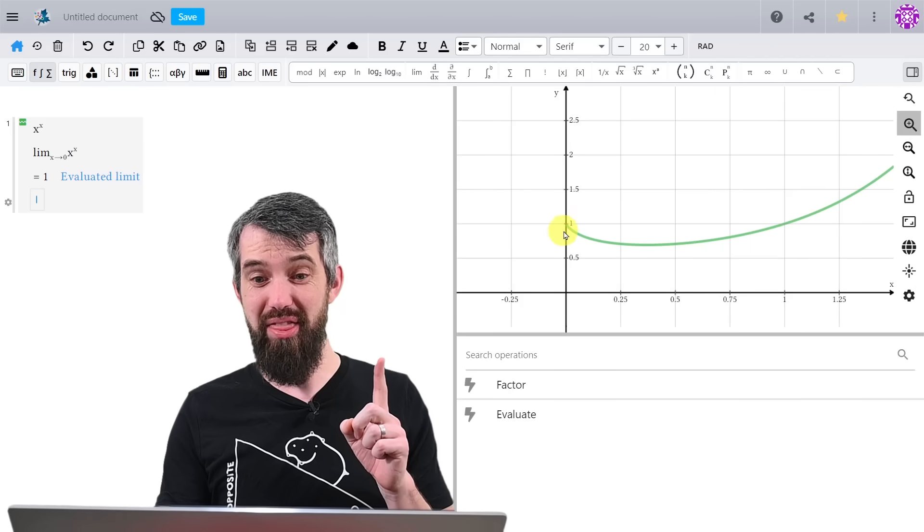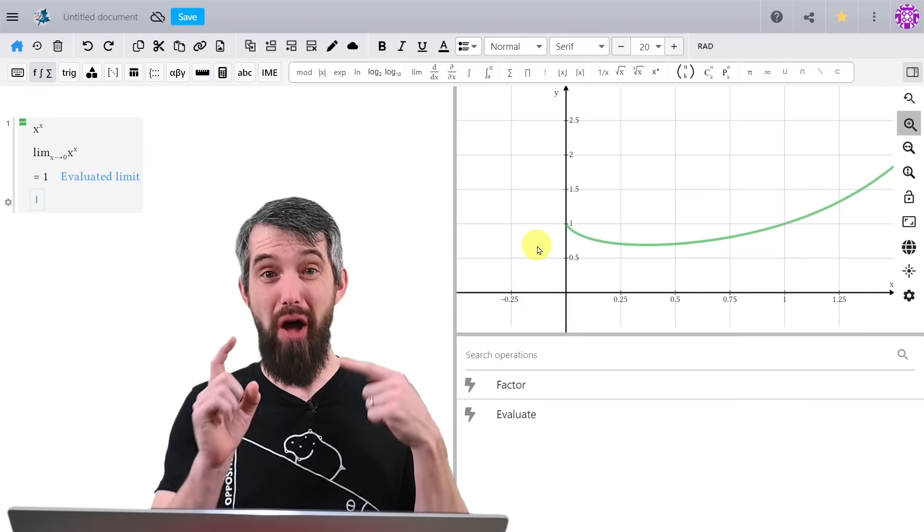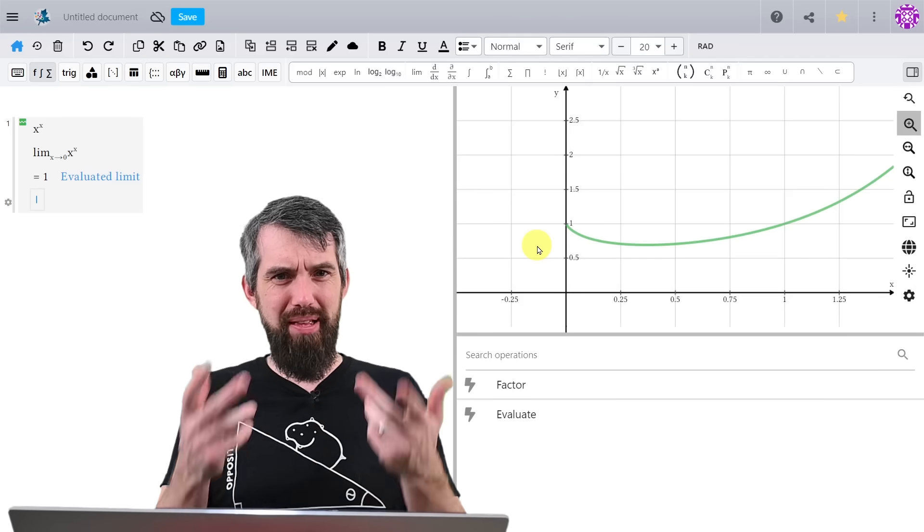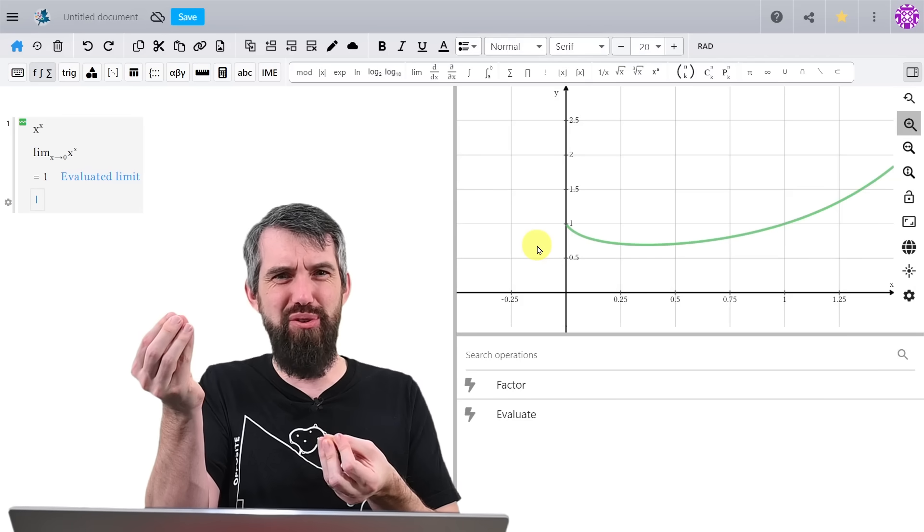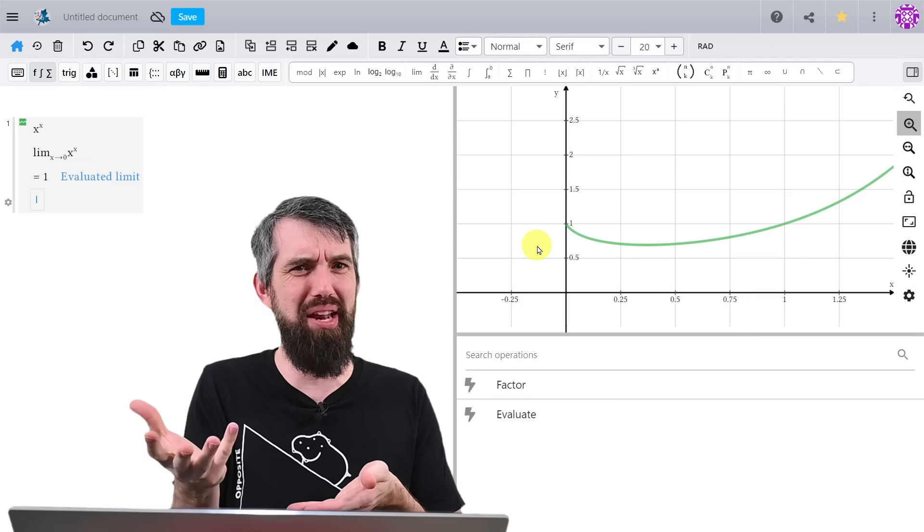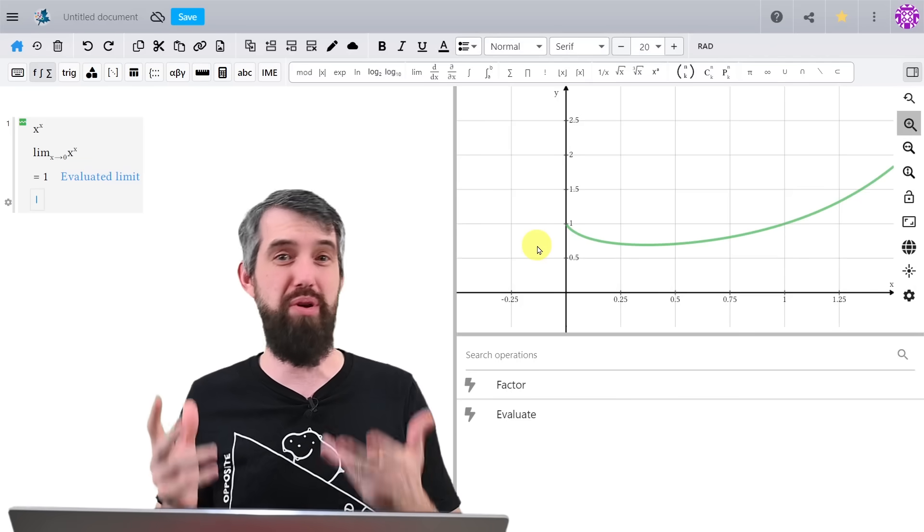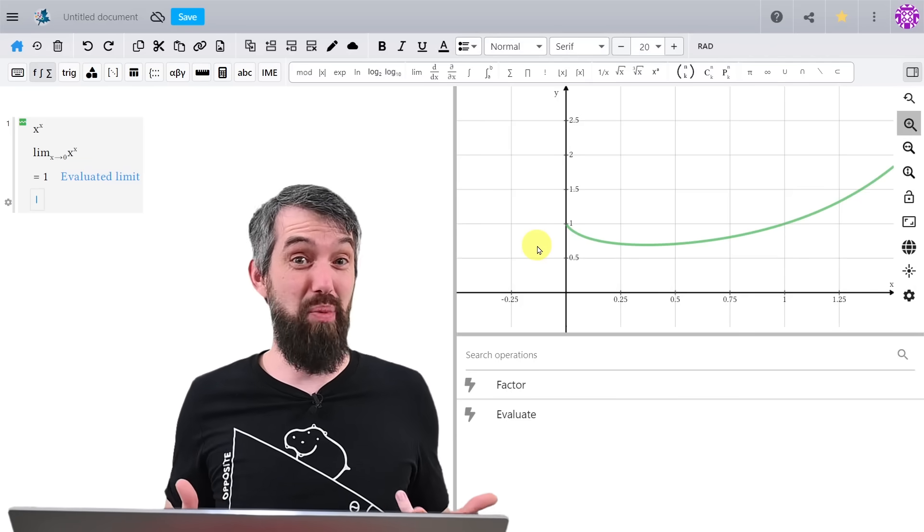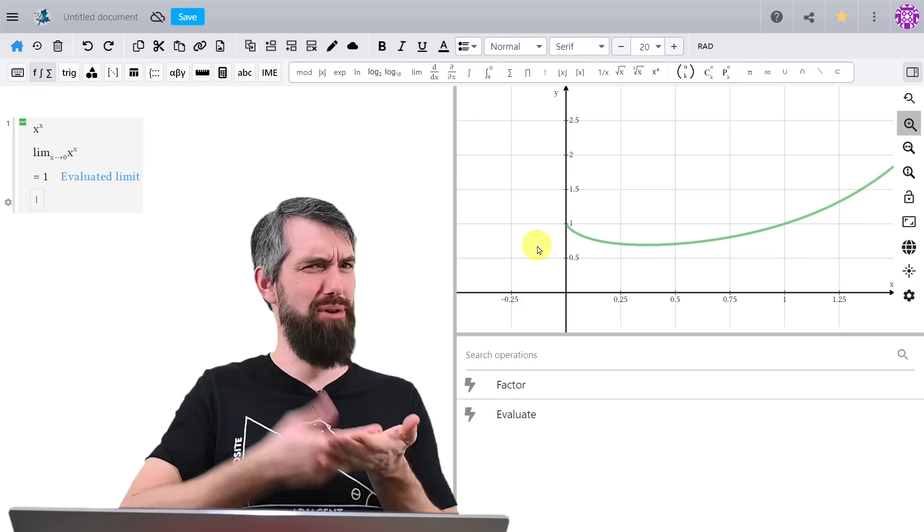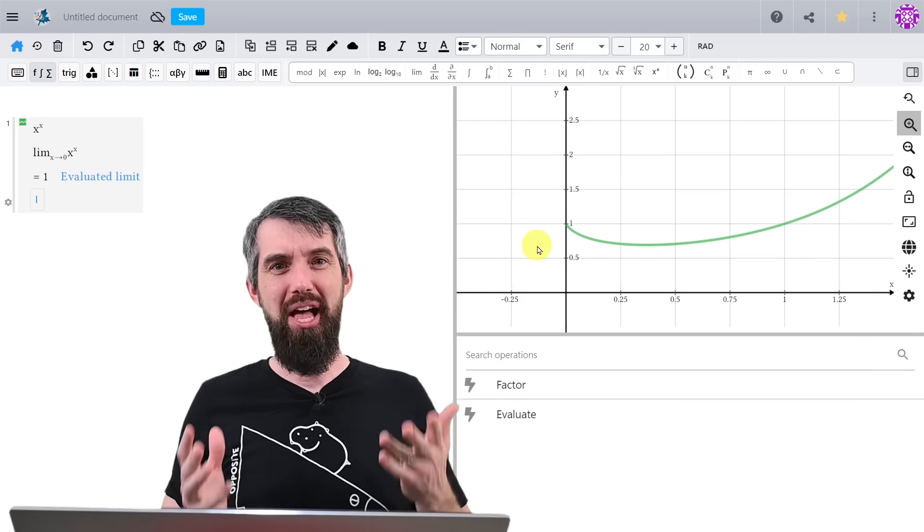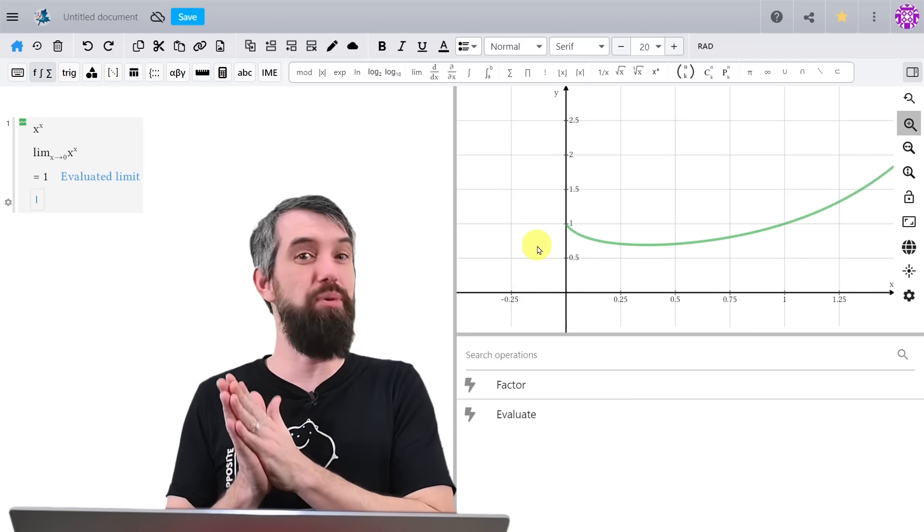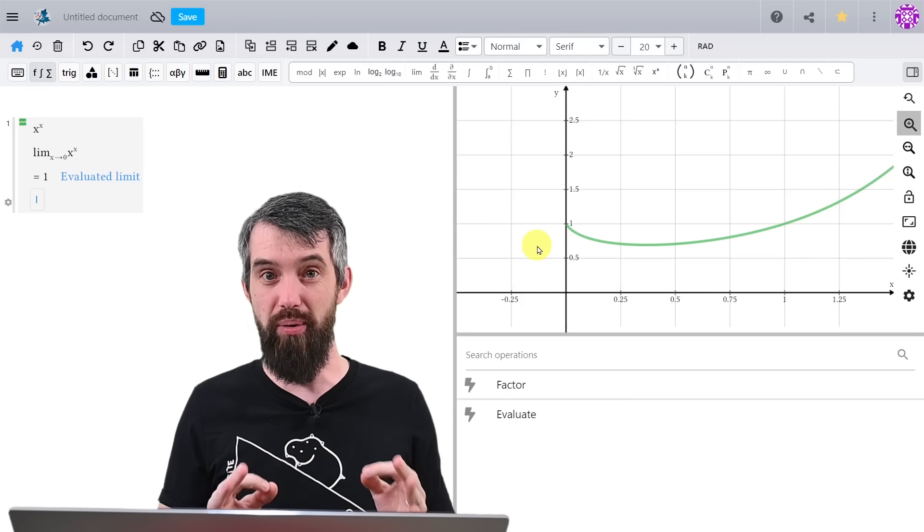It's also worth noting that the plot just drops off for negative values. And this is because if you take something like negative 1 half to the power of negative 1 half, you're taking the square root of a negative number not allowed over the real numbers. There are actually some values where it's not problematic to the left, like negative 1 third to the power of negative 1 third, not a problem. But so many of them are problems that we're just not going to sketch anything to the left of x equal to 0.